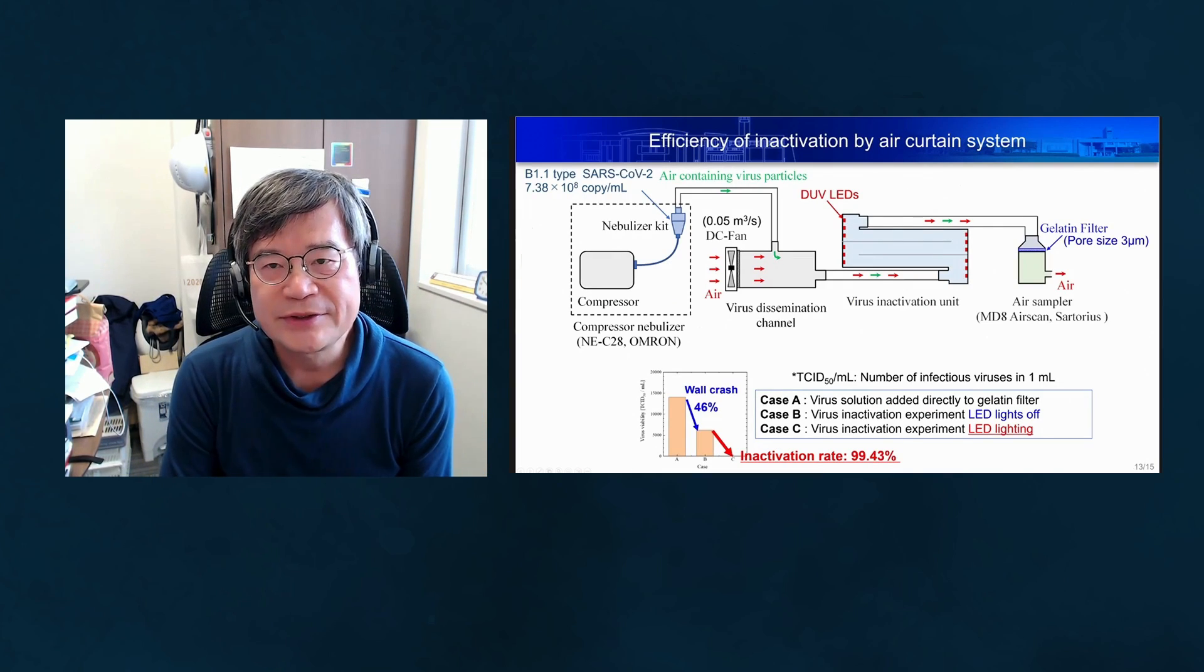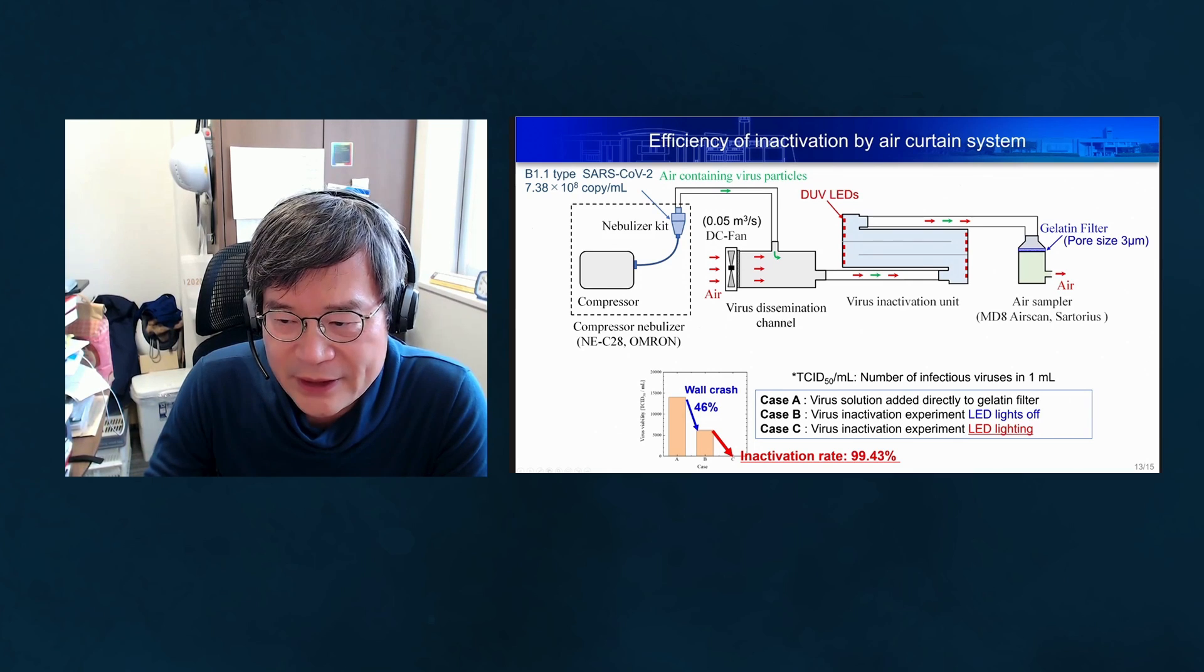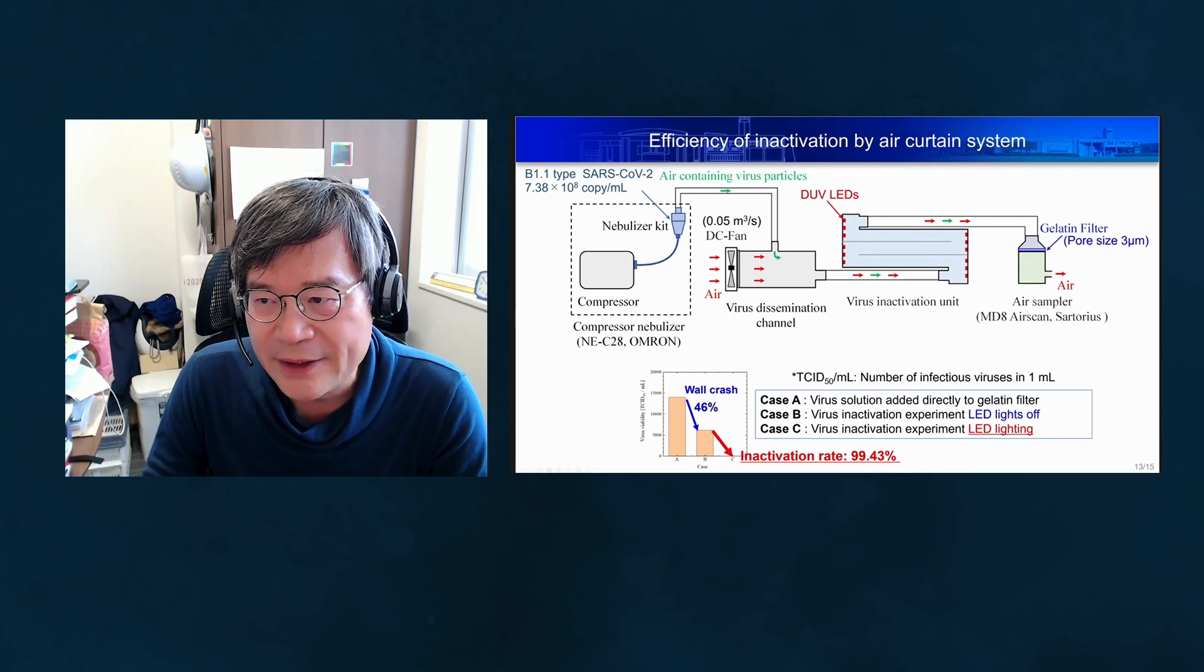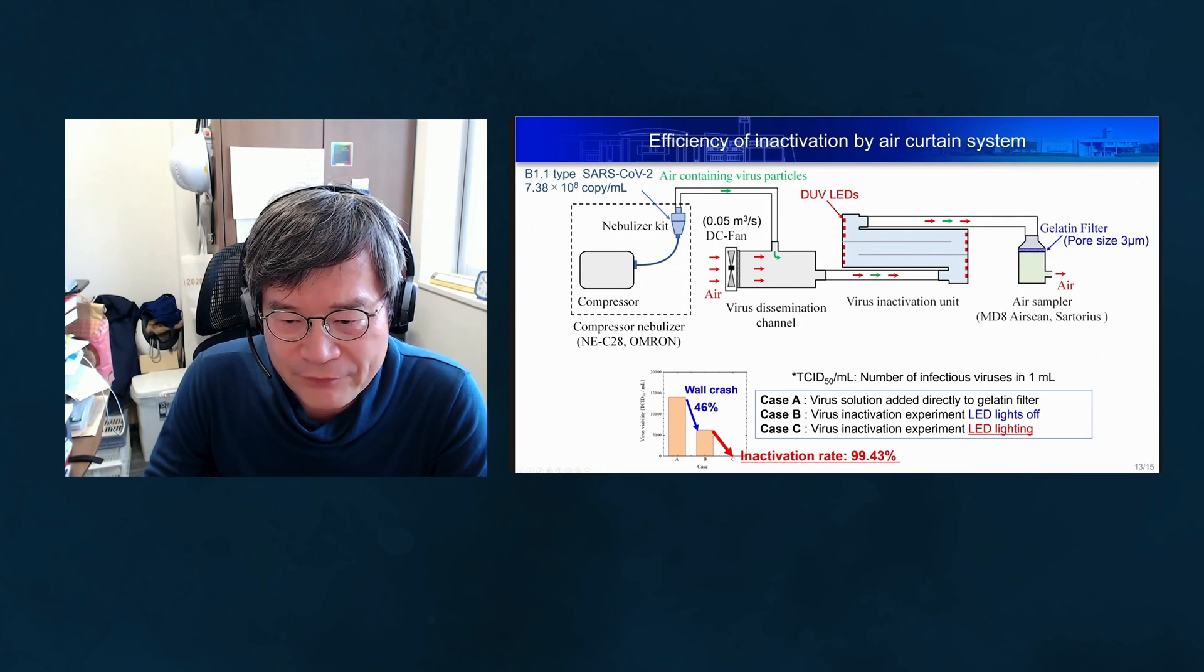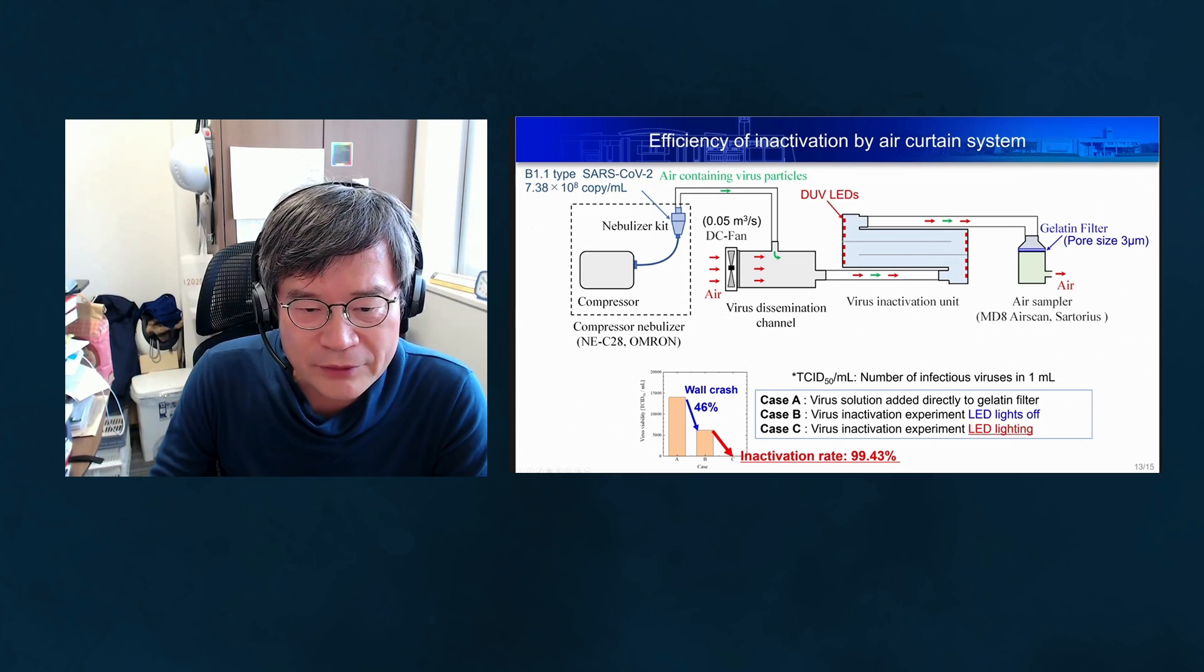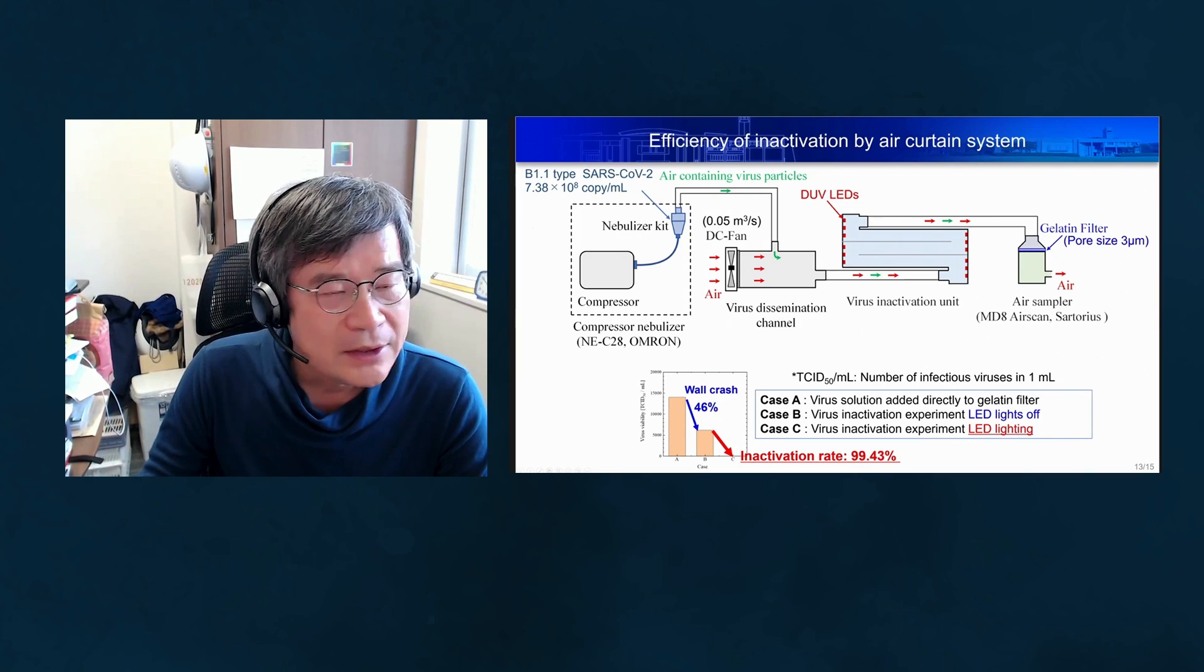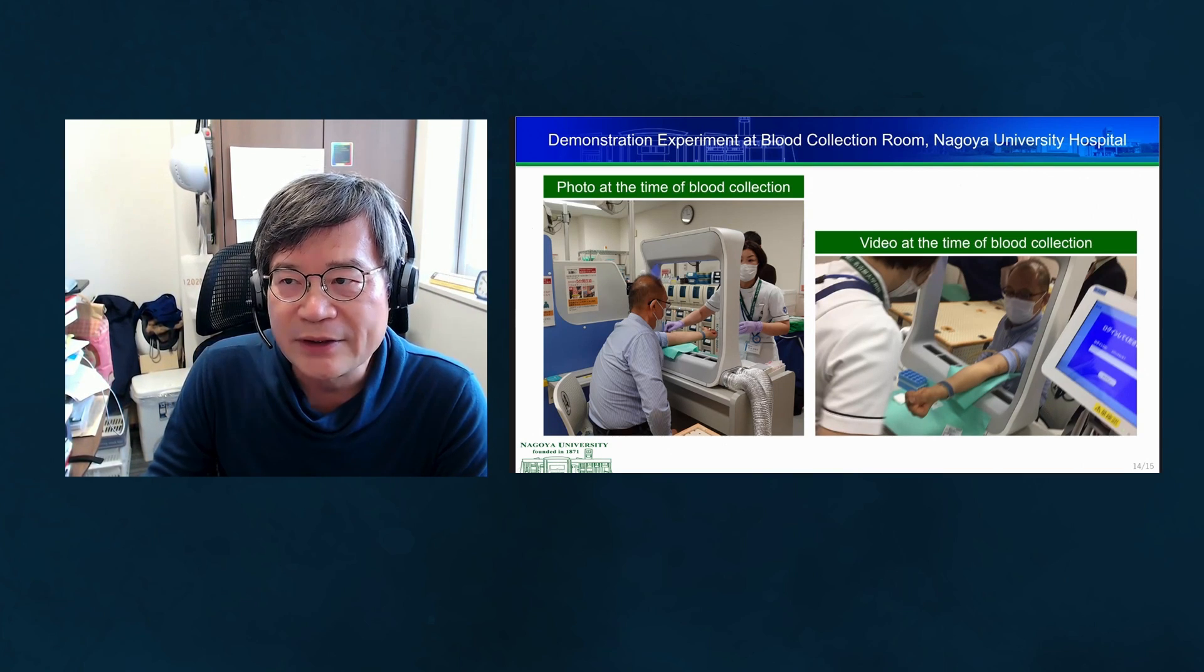The efficiency of our irradiation system with the air curtain is evident. Without LED lighting, air containing viruses passes through filters and goes out again. Virus inactivation without LEDs is 46 percent, caused by water droplet collision. But with LED lighting, the inactivation rate is 99.43 percent, which is significant.